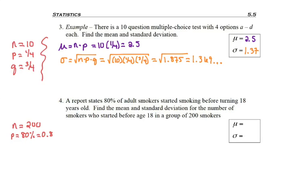The probability of starting before you're 18 is 80%, but I have to change percentages into decimals to use them in a formula. And so the probability of failure is 20%, which is 0.2.